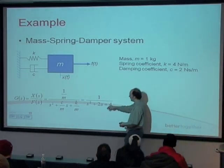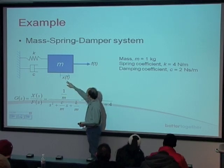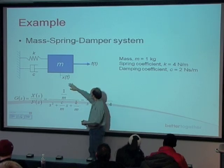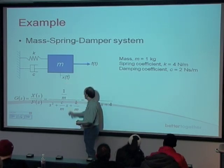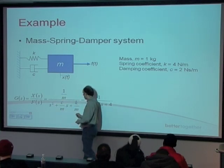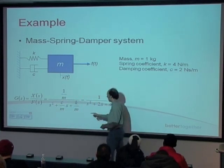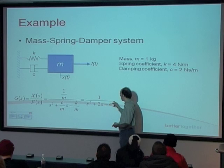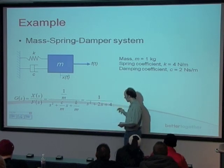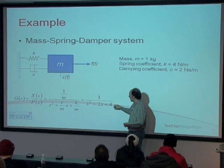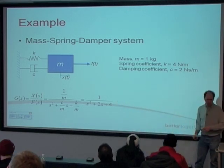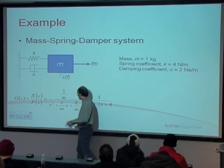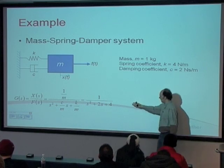Going through the motions from the first couple of weeks of this course, we get a transfer function: G(s) equals X(s) in the s domain divided by the force F(s). That's our transfer function — this is our input, this is the output. You multiply through by m, and since m equals one, you end up with the transfer function one over s squared plus 2s plus 4. This is in the standard form we're looking at.